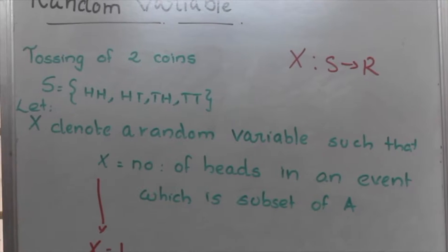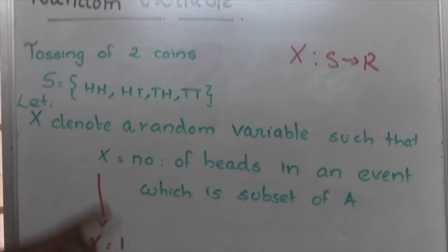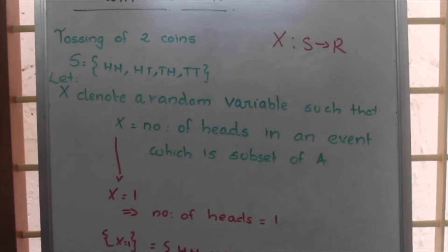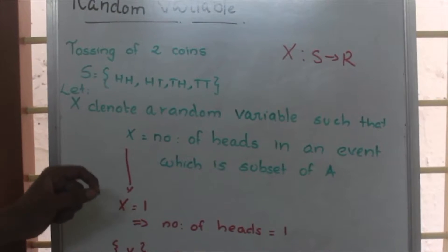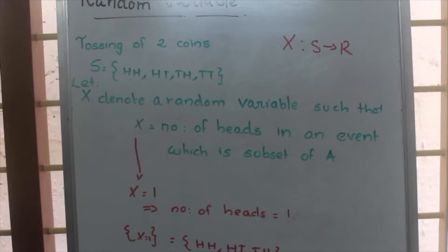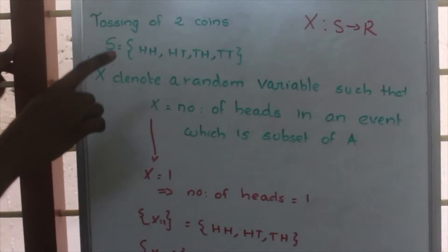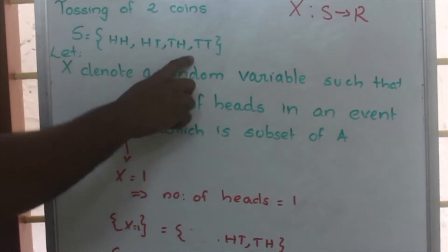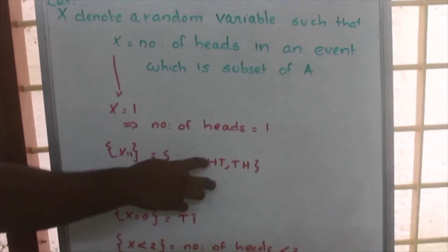Suppose if X is equal to 1. We already defined X equal to number of heads in an event. So if X is equal to 1 means number of heads in the event is equal to 1. Set of X equal to 1 means set of those events which are having heads equal to 1. Here we have two events for which heads equal to 1, that is HT and TH. For these two events, head is 1. So we have a set HT, TH.